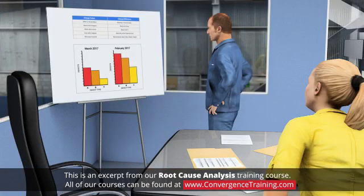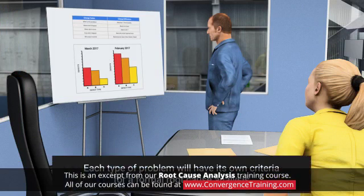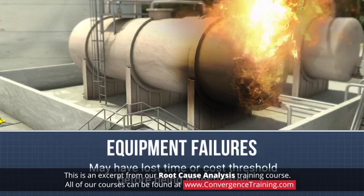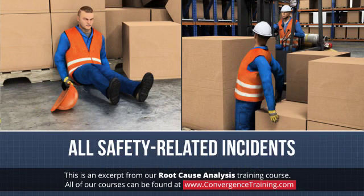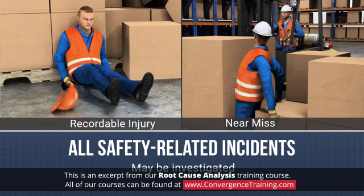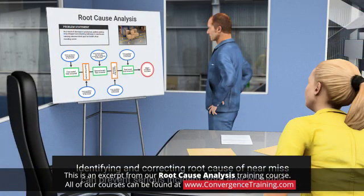The impact of a problem can be measured in a variety of ways, and each type of problem will have its own criteria for a formal root cause analysis. For example, equipment failures may have a lost time or cost threshold before being investigated, while all safety-related incidents, whether they result in a recordable injury or were just a near miss, may be investigated. Identifying and correcting the root cause of a near miss can prevent a serious incident from ever occurring.